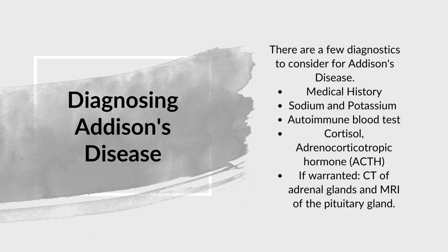For Addison's disease diagnostics, you want to do a medical history — get that background, see if they've had any complications previously, ever been told their cortisol levels were low, or if they have a family history. You also want to assess sodium and potassium levels. You can do an autoimmune blood test. Then the common ones: you'll do a cortisol level as well as an ACTH — adrenocorticotropic hormone — level. With Addison's, these will be low because we are deficient in cortisol.